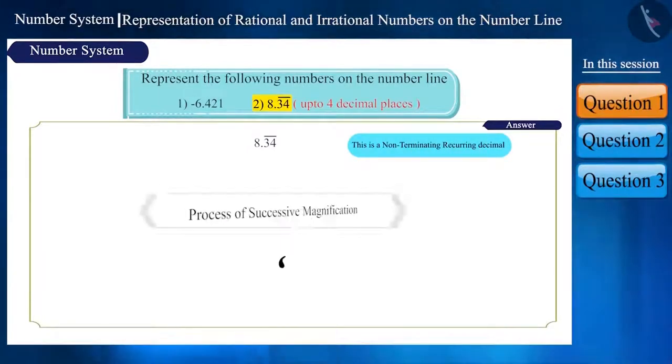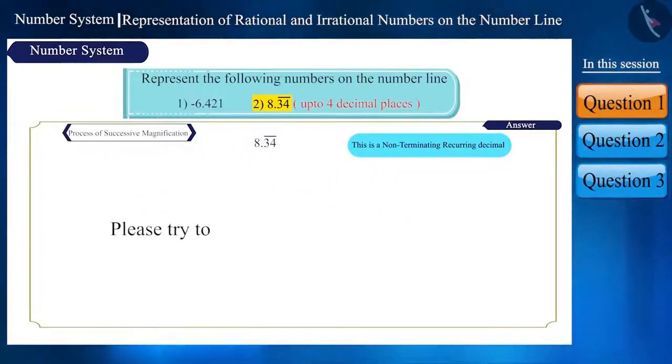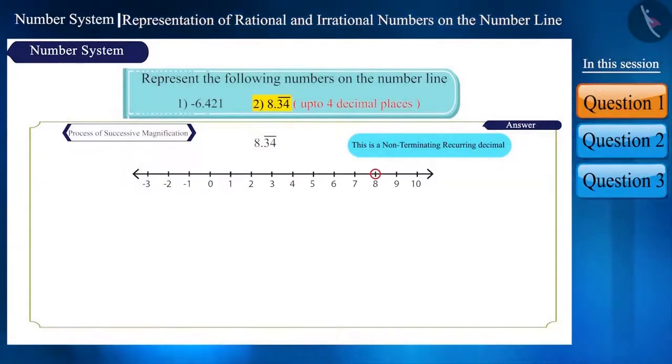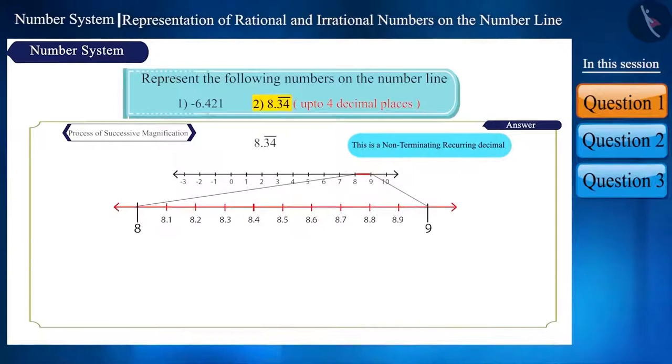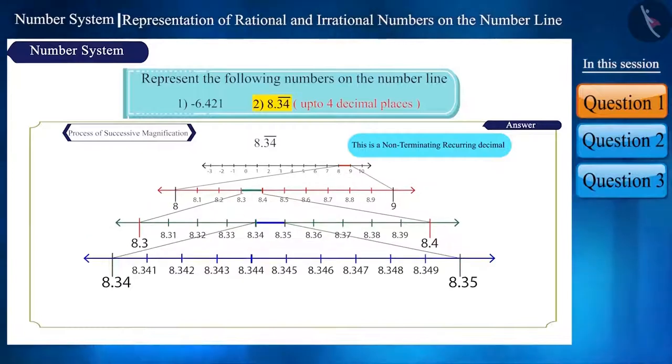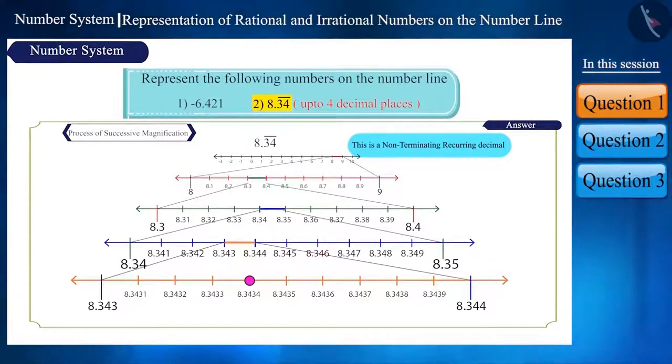Will we be using the same process of successive magnification here? Yes. Please try to solve this question on your own. This number will lie between 8.3434 and 8.3435 on the number line.